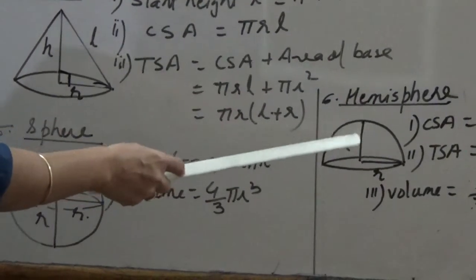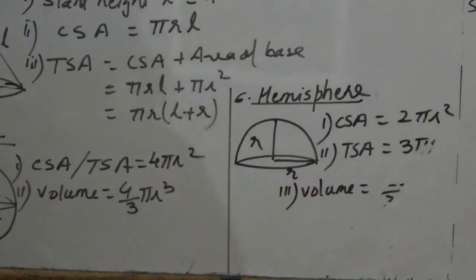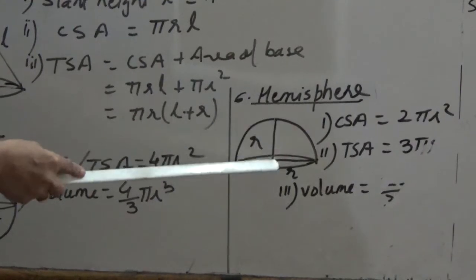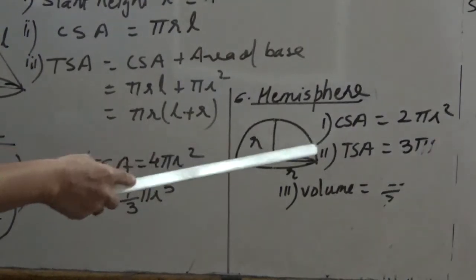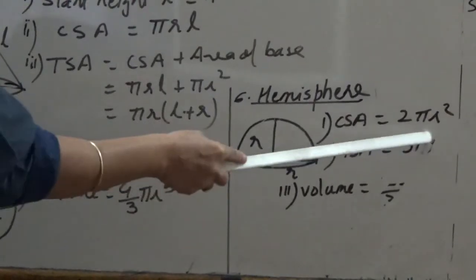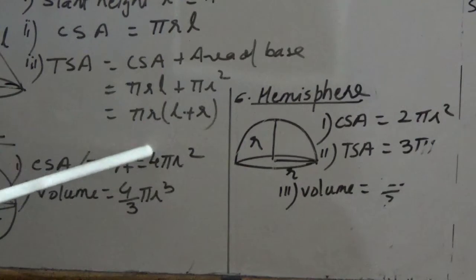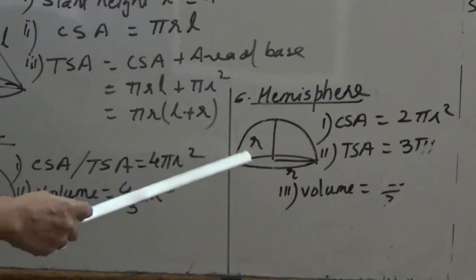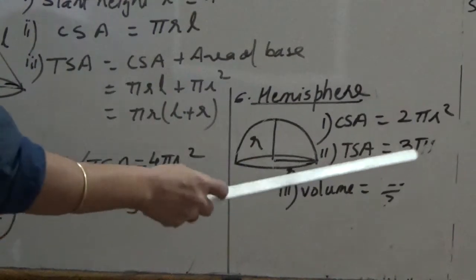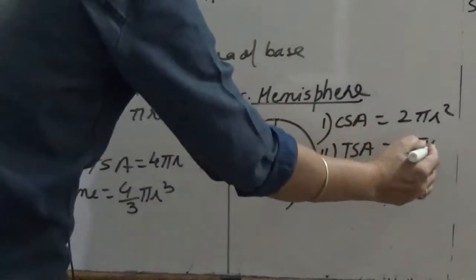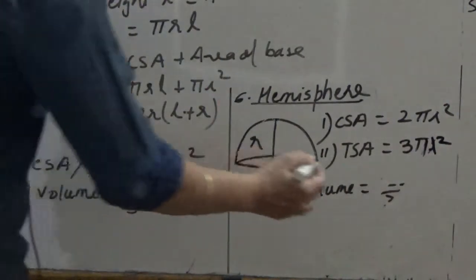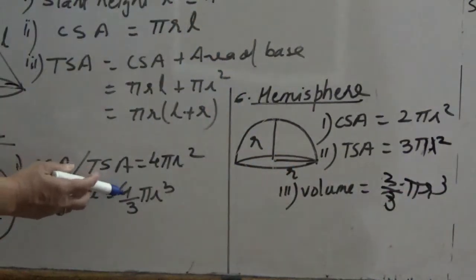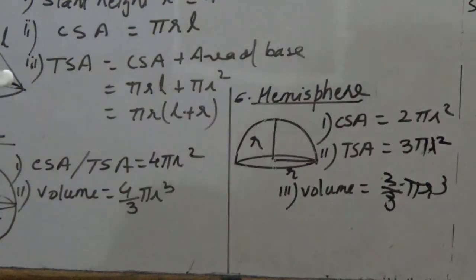A hemisphere is half of a sphere. In a hemisphere, the height is also equal to the radius. The CSA of a hemisphere is 2πR² (half of 4πR²). For total surface area, we add the CSA and the circular base: 2πR² + πR² = 3πR². The volume of a hemisphere is (2/3)πR³, which is half of the sphere's volume.